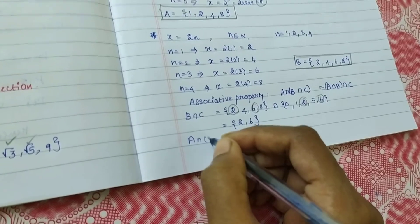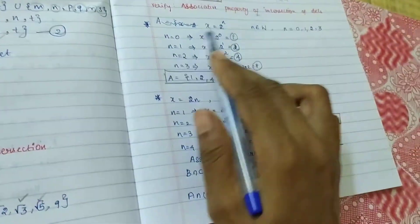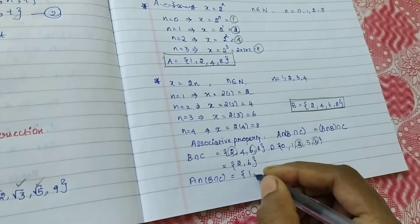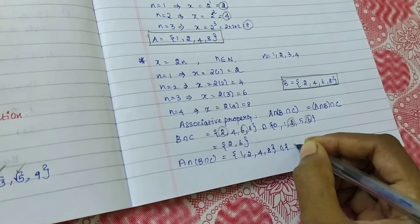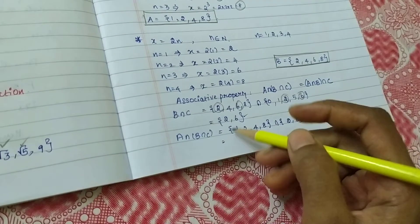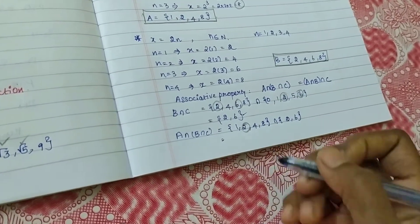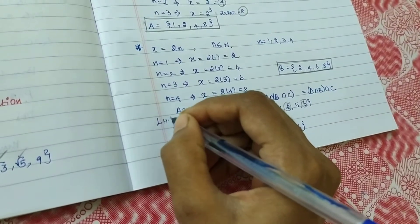Now, A intersection B intersection C, what are the A value? A value we did: 1, 2, 4, 8. Intersection 2, 6. This value. So, I can find out 2 alone common.